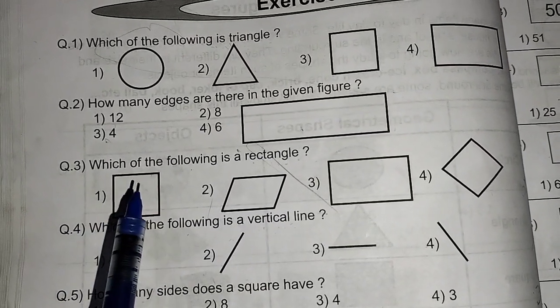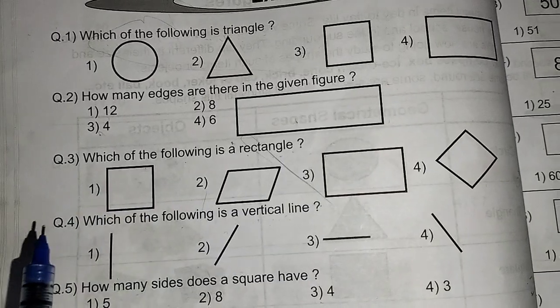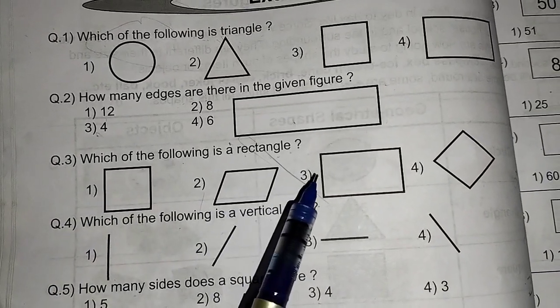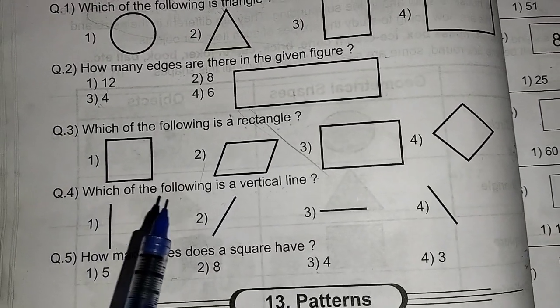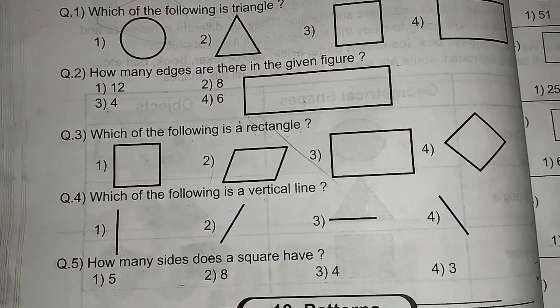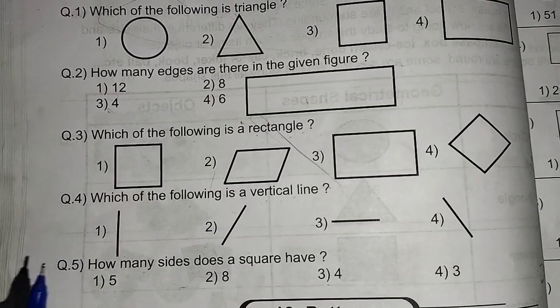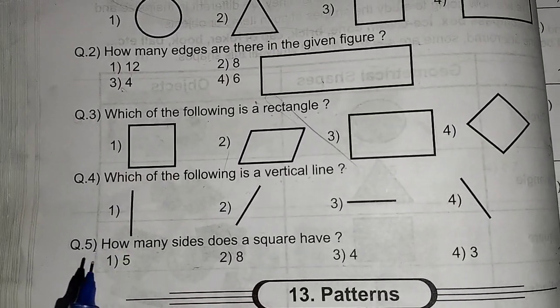Which of the following is a vertical line? The vertical means standing up, which one? Option number one. Next, how many sides does a square have?